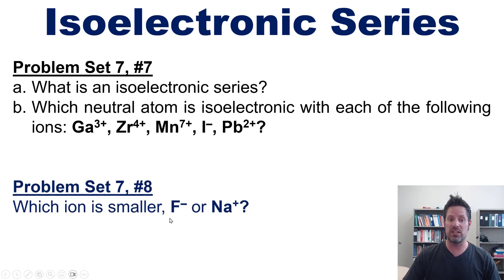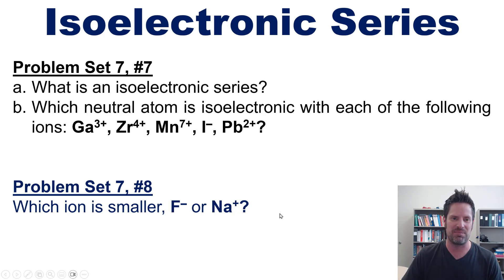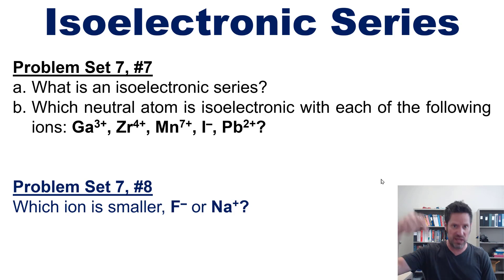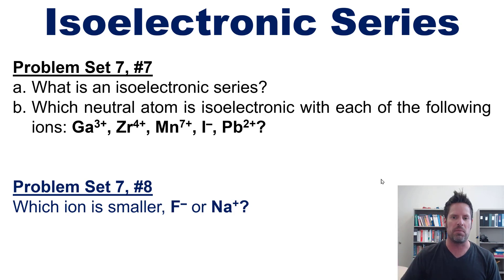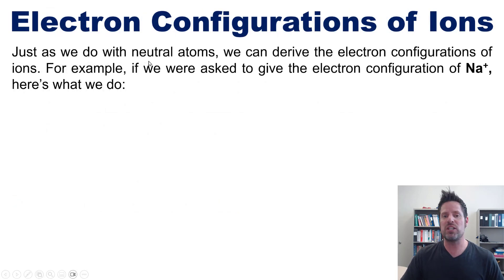Here's a sample problem: what is an isoelectronic series, and which neutral atom is isoelectronic with each of these elements? As a follow-up: which of these ions is smaller — fluoride (F⁻) or sodium cation (Na⁺)? I invite you to try this on your own, then click the link in the description where I answer it for you.